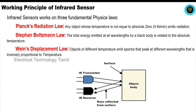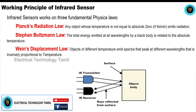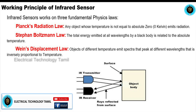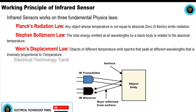What is the principle of IR sensor? The first one is Planck's radiation. The second one is Stefan-Boltzmann. The third one is Wien's Displacement law. Any object whose temperature is not equal to absolute zero emits radiation.